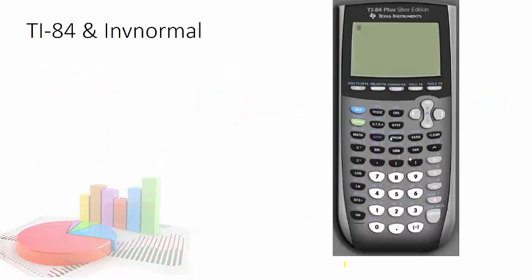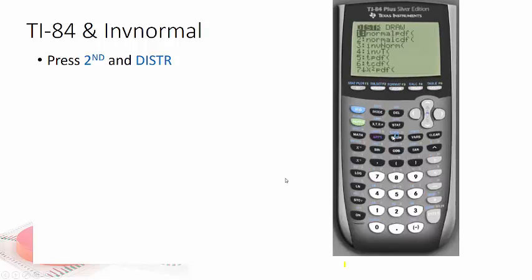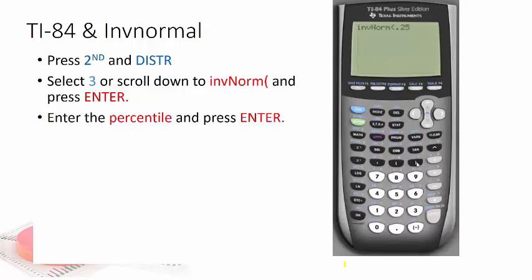Now you can actually do this on your calculator. So how does it work? Well first of all you would press second and distribution. So you hit second the blue key and distribution. Then you'll see number three is inverse norm. Hit enter and then put in the percentile. In this case 0.25. But wait there's more.